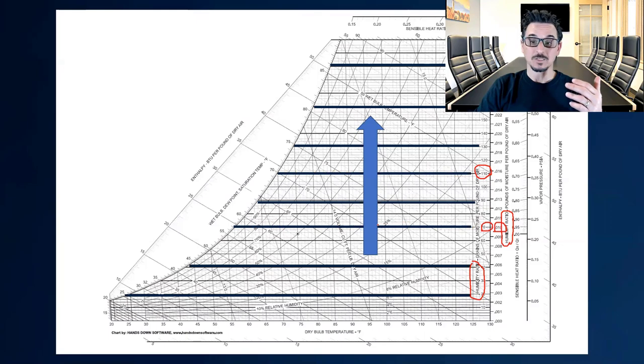As we move up the psychometric chart, we are adding humidity. Obviously this point up here has more grains than this point down here, so that's humidification.